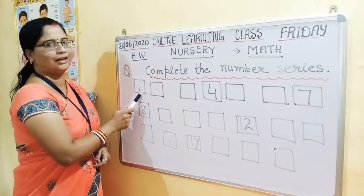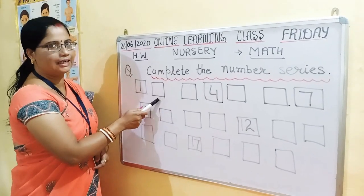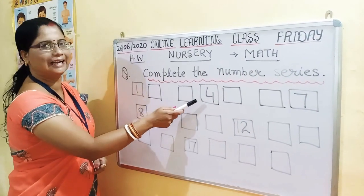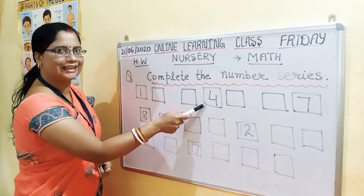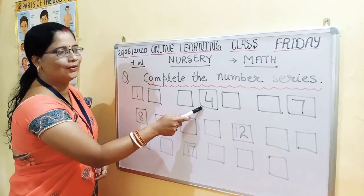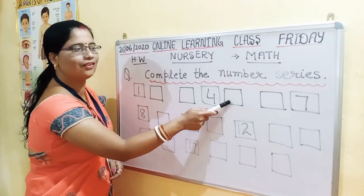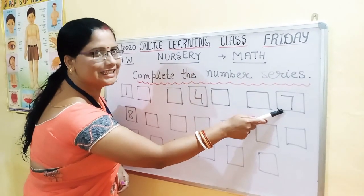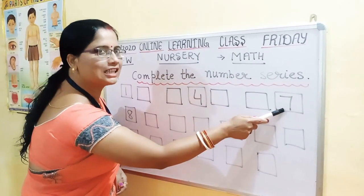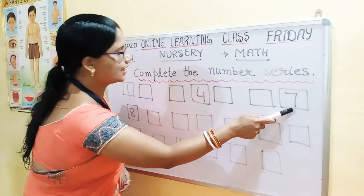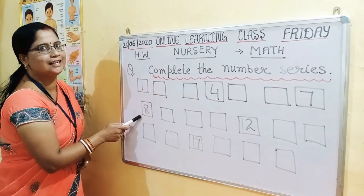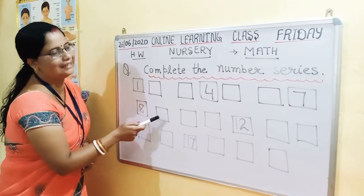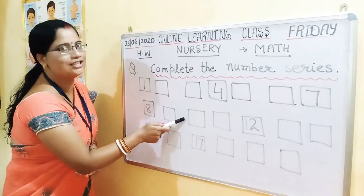1, and after that 2, 3, and 4 is given — 4 is already there. After 4 comes 5, 6, 7. 7 is given. 8. 8 is already given. 9, 10. Write 1, 0 — 10.